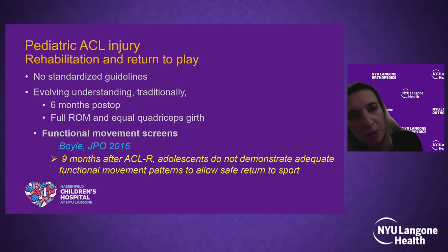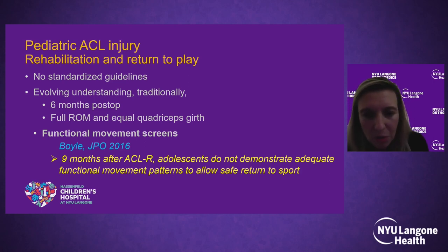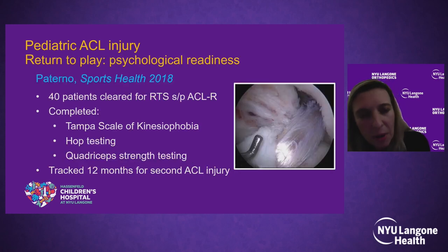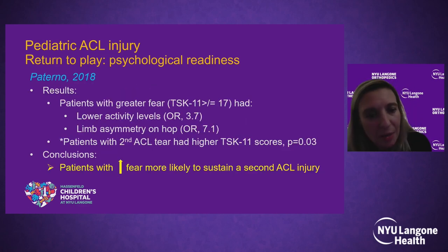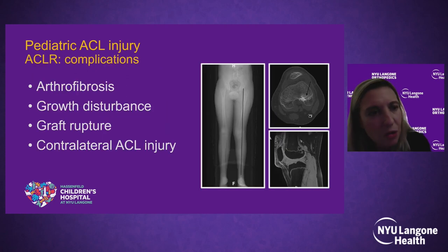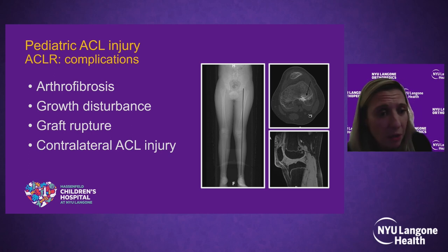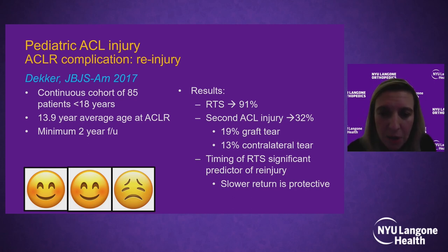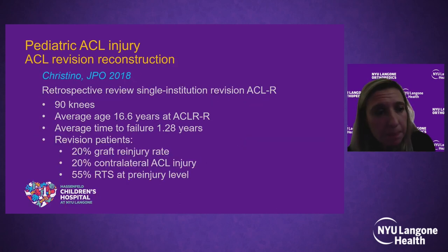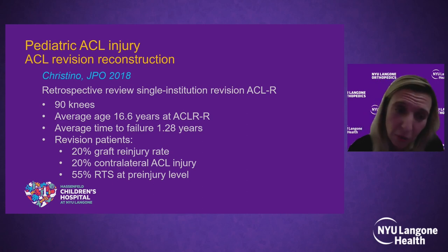We don't have standardized rehabilitation or return-to-play guidelines for children, but we know that even nine months after ACL reconstruction, many kids are not ready to safely protect their knees. Psychological readiness is important — kids who are not psychologically ready or have fear are significantly more likely to have a second injury. The dirty little secret of pediatric ACL reconstructions is the graft rupture rate, which is incredibly high — one recent paper demonstrated it to be as high as 32%, 20% ipsilateral and 13% contralateral. This is a real problem because if you don't get it right the first time, you're even less likely to succeed the second time.